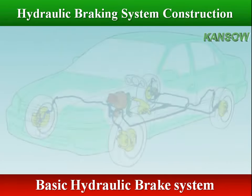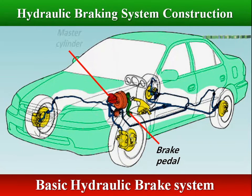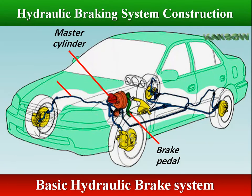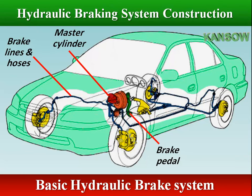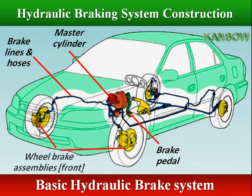A basic braking system has a brake pedal, a master cylinder to provide hydraulic pressure, brake lines and hoses to connect the master cylinder to the wheel brake assemblies, and the wheel brake assembly's drum or disc that stops the wheels.